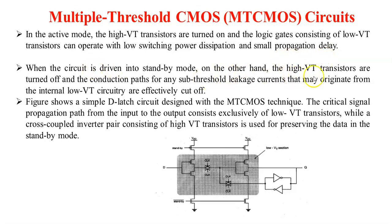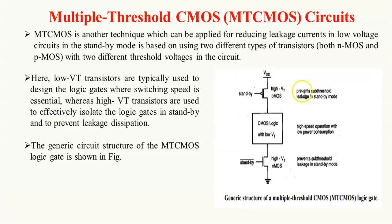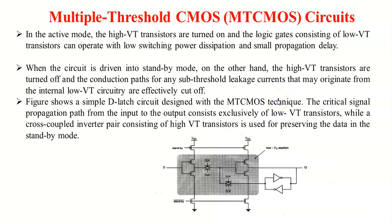In standby mode, the NMOS transistor goes to off condition, cutting the CMOS logic circuit from ground, thereby eliminating subthreshold leakage and reducing standby power dissipation. This circuit gives the example of a T-LATCH using the MTCMOS circuit. This is the circuitry for a CMOS T-LATCH, where both high threshold voltage PMOS and NMOS transistors are placed above and below the logic to prevent leakage in standby mode.